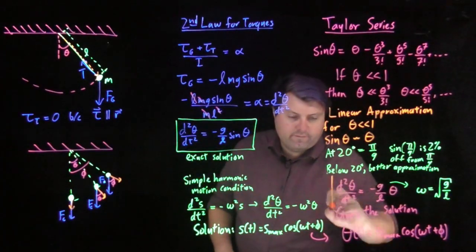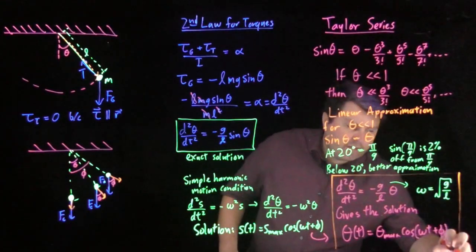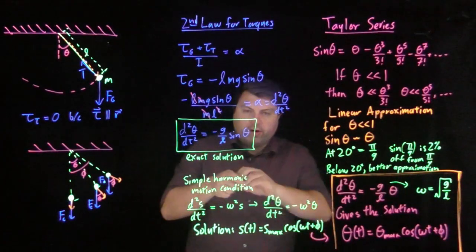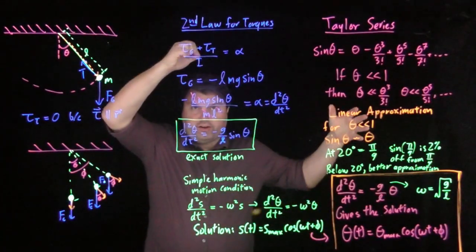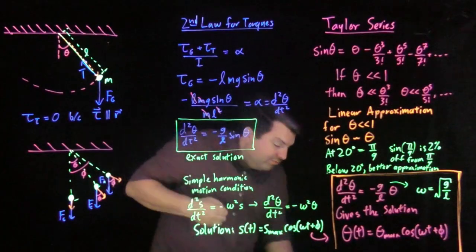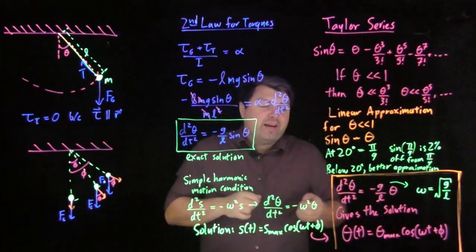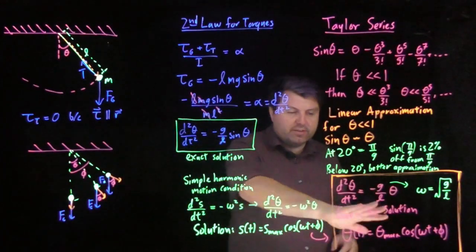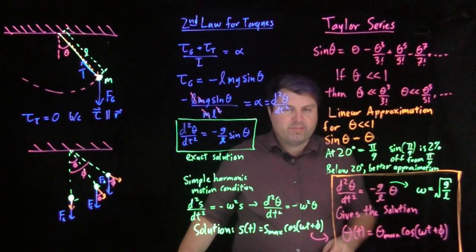So then, if we can use this approximation, if we are not swinging it overly wildly from very large angles, then we have simple harmonic motion. If we have it from small enough angles, we are nice and well within simple harmonic motion.